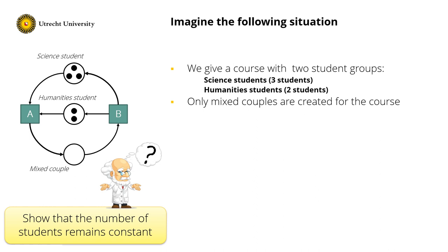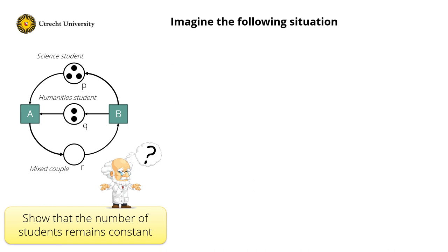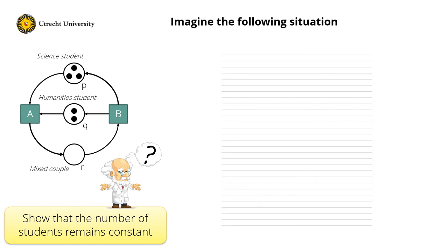For that, I first relabel the places. I have places P, Q, and R instead of the science students, humanity students, and mixed couples. Initially I have three tokens in place P, two tokens in place Q, and zero tokens in place R. So this is the initial marking.